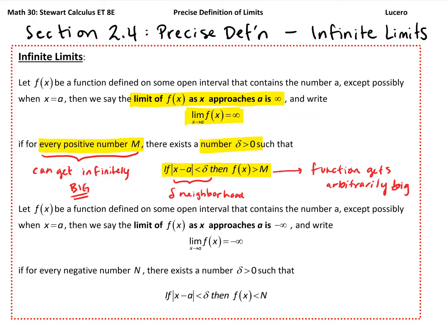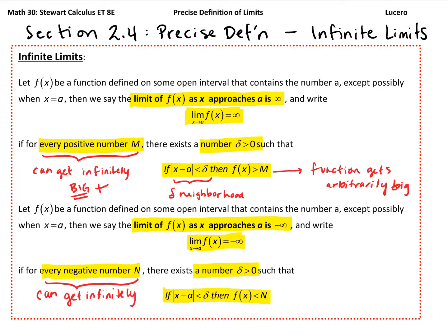We've written that up for the limit going to positive infinity. The exact opposite scenario gives us negative infinity: the limit of f of x as x approaches a is negative infinity if for every negative number, there exists a delta greater than zero such that as long as the distance between x and a is less than delta, then f of x will be less than that negative number. So this can get infinitely negative — large in magnitude but in a negative direction.